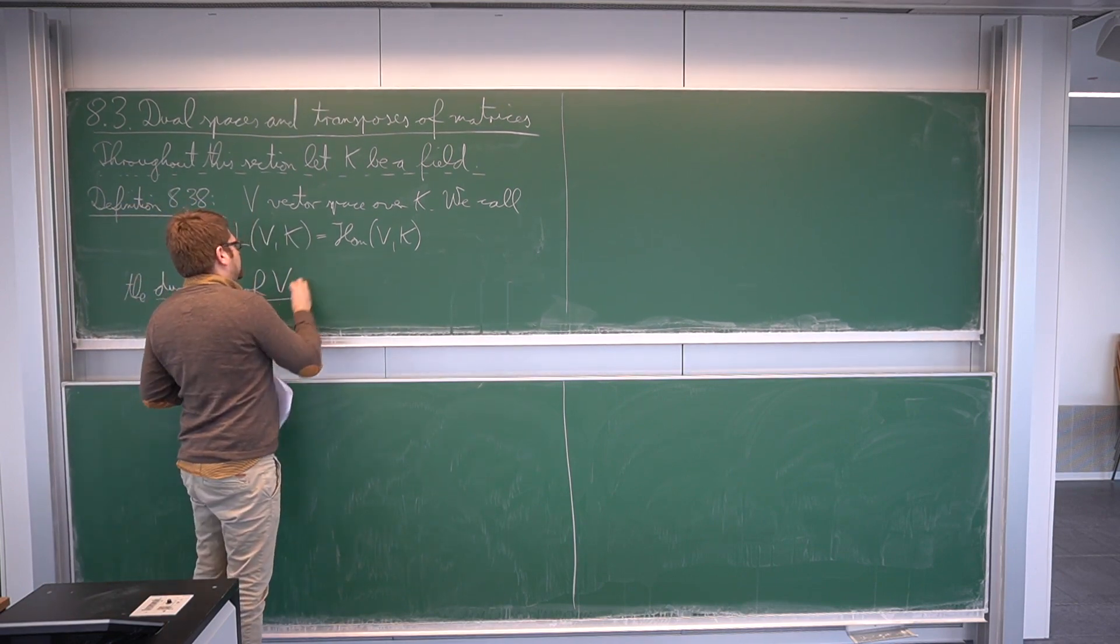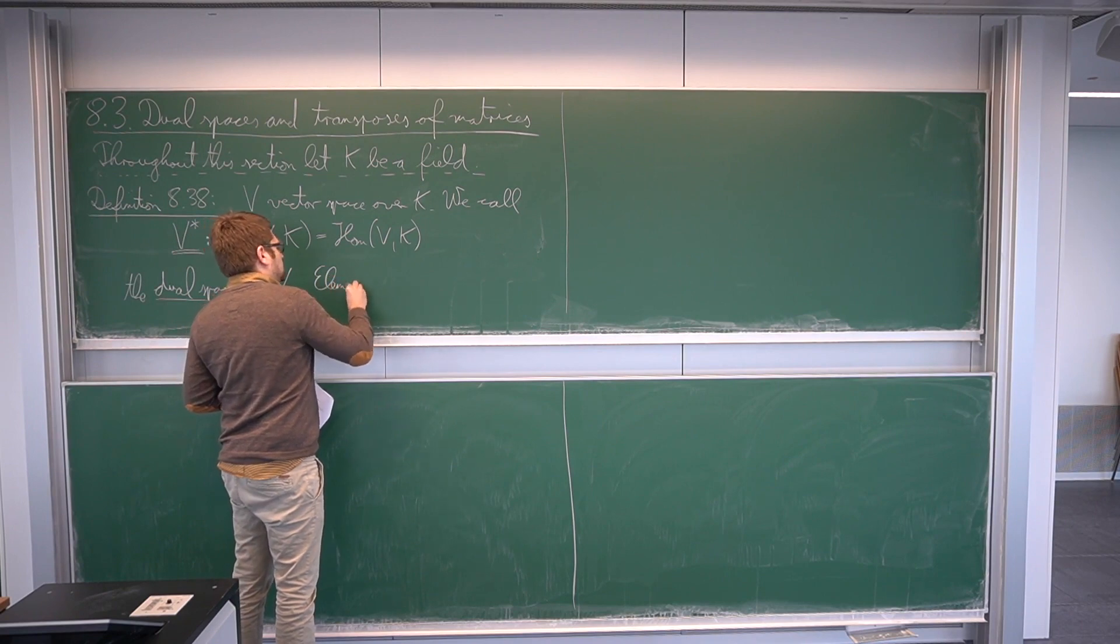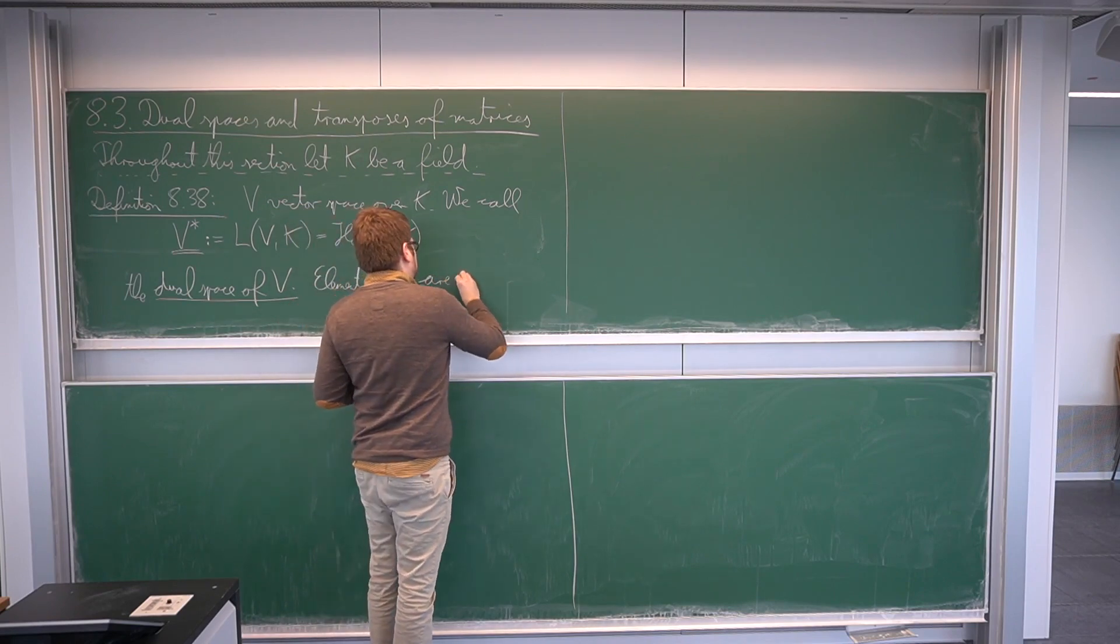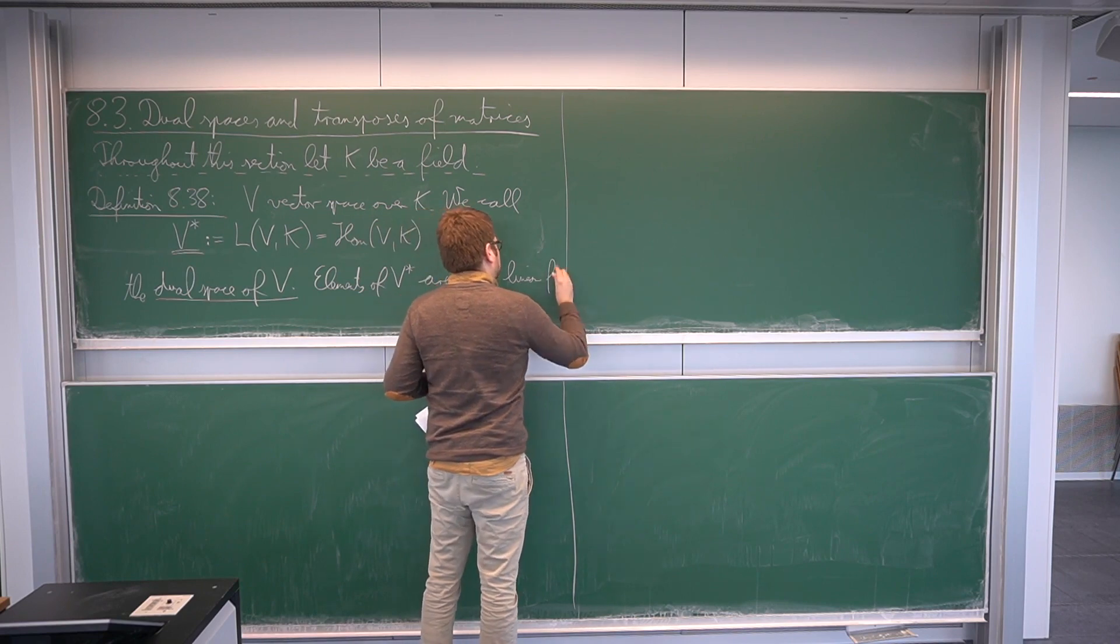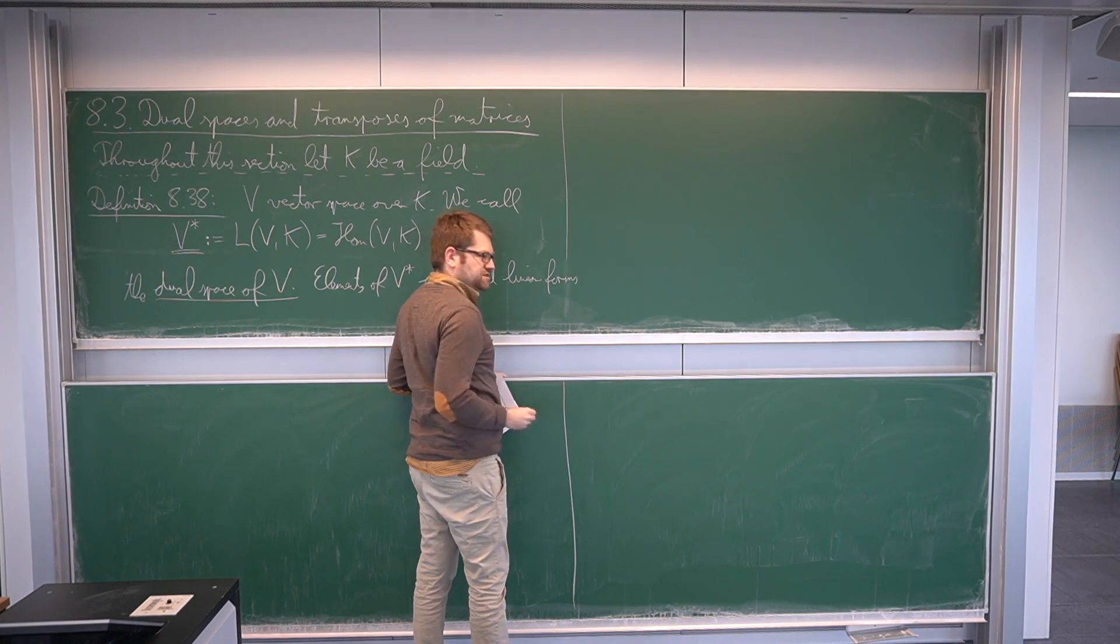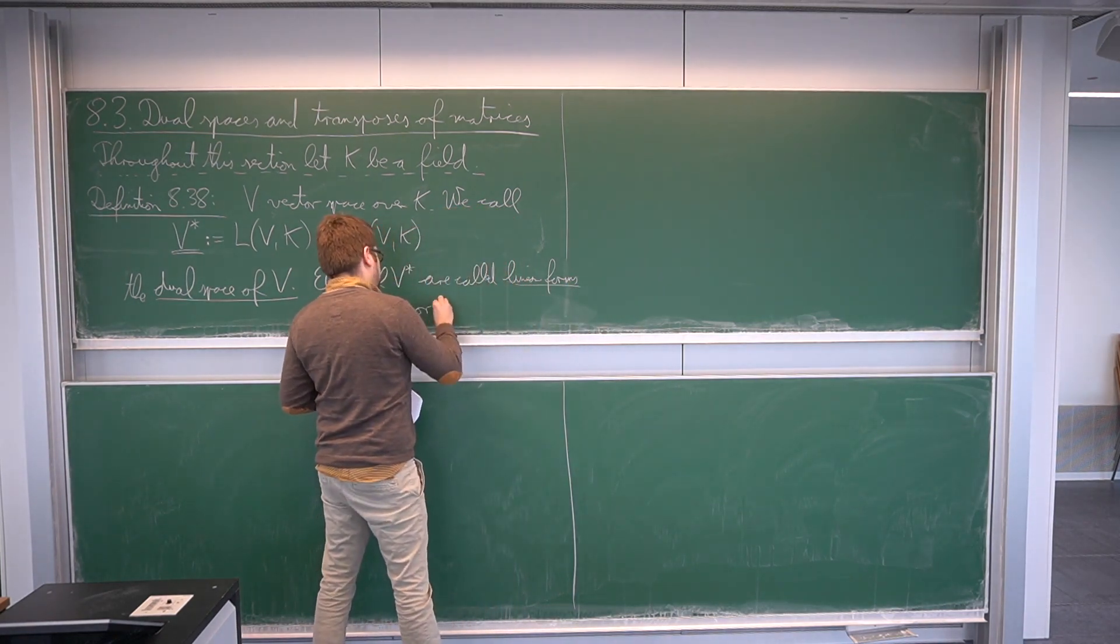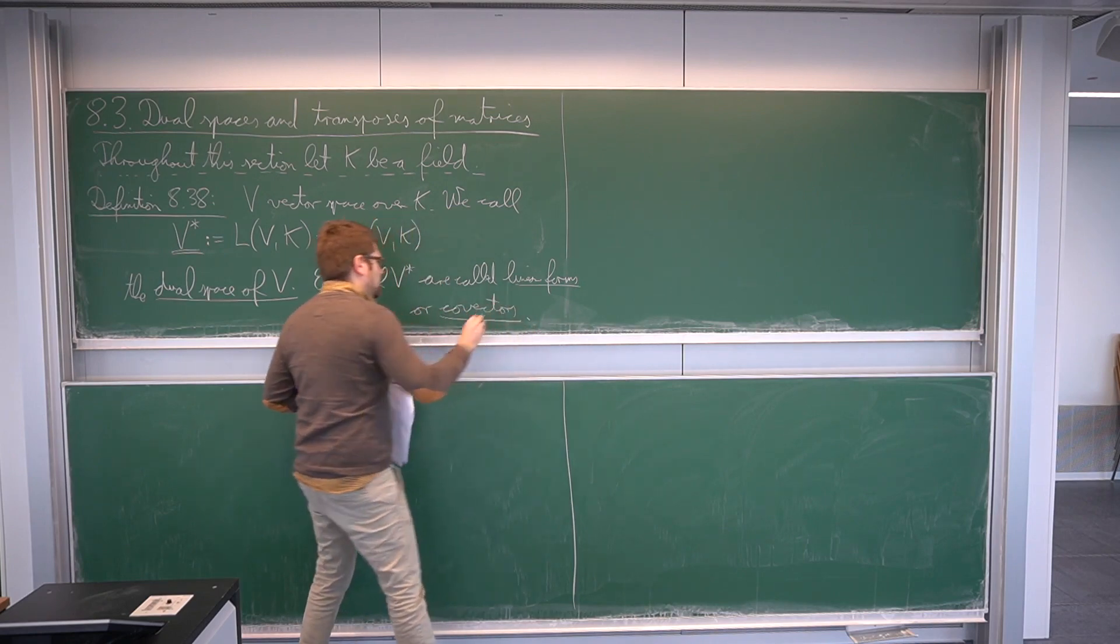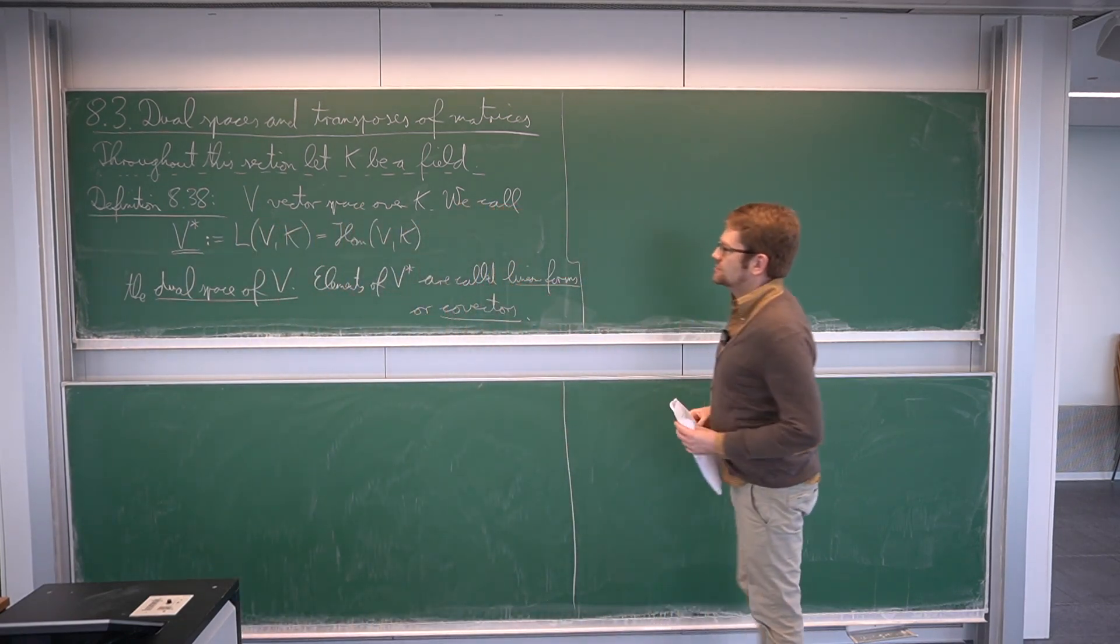And elements of this dual space, so linear maps from v into this ground field k, elements of v star, they are often called linear forms or sometimes by other authors also called co-vectors. A form is always something mapping into the field, from a vector space into the field.